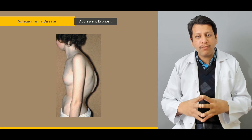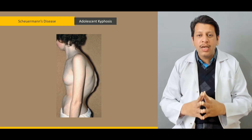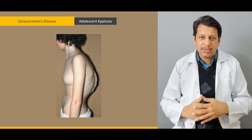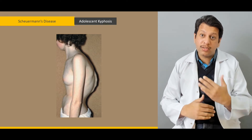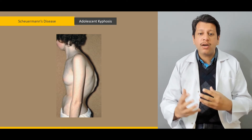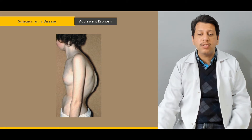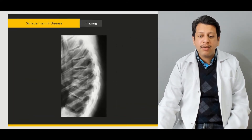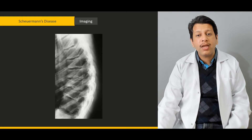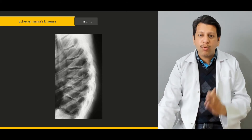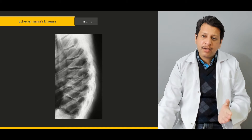We will briefly discuss how Scheuermann's disease presents, what its genetics are, and the different theories regarding it that are more prevalent. Then we move on to what we see on X-rays and how to calculate thoracic kyphosis — what are the normal angles and what are the different abnormal angles which we need to understand.